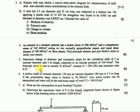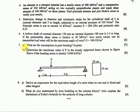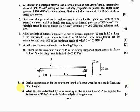Question number six uses Chapter 6 theory. Question number seven part A is theory from Chapter 6, and part B is a numerical from Chapter 7. Question number eight part A asks to derive and explain, and part B is a numerical from Chapter 8, covering fixed and simply supported beam conditions.